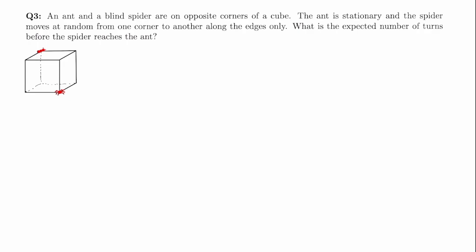Hey everyone. In today's video we'll be trying to solve this problem. Basically there's a cube with a spider and an ant on two opposite corners of that cube. The spider moves at random along the edges and we're asked to calculate the number of expected turns before the spider reaches the ant.